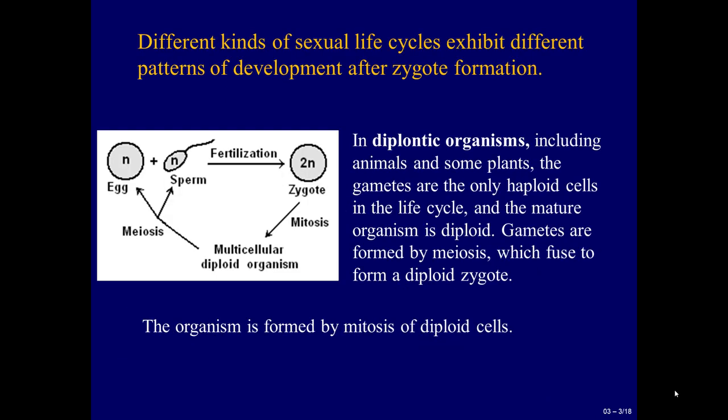Different kinds of sexual life cycles exhibit different patterns of development after zygote formation. In diplontic organisms, including animals and some plants, the gametes are the only haploid cells in the life cycle, and the mature organism is diploid. Gametes are formed by meiosis, which fuse to form a diploid zygote. The organism is formed by mitosis of diploid cells.